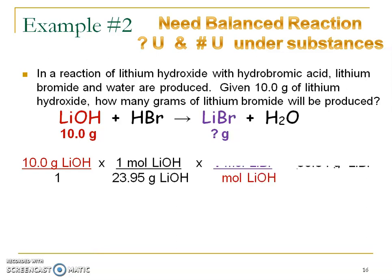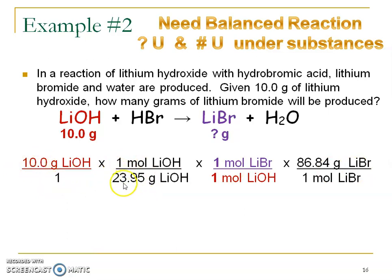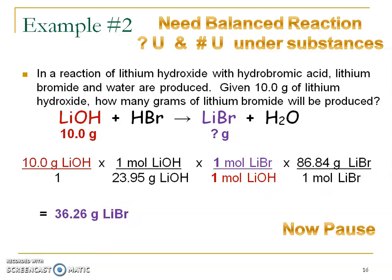Starting point multiplied by the conversion line: grams of lithium hydroxide on the bottom, moles of lithium hydroxide on top — mole island. One goes with mole; pause to find the mass of LiOH. Hopefully you got 23.95. Multiply by the conversion line: moles of LiOH on the bottom, moles of LiBr on top — this is the only time we use coefficients, and it's a one-to-one ratio. Multiply again: moles of LiBr on the bottom, grams of LiBr on top — another mole island problem. Pause and find the mass of LiBr, then do the mathematics: 10 ÷ 1 × 1 ÷ 23.95 × 1 ÷ 1 × 86.84 ÷ 1 = 36.26 grams of LiBr.